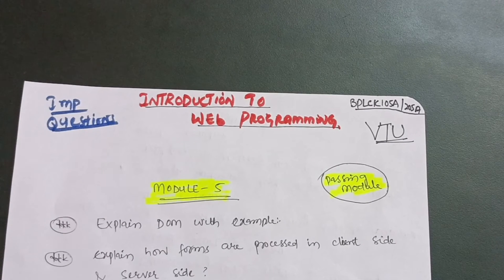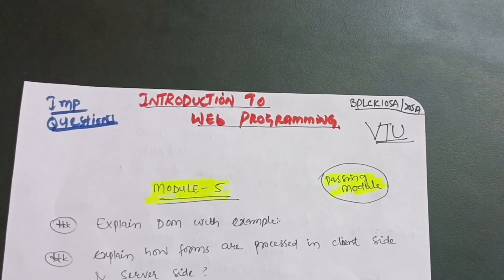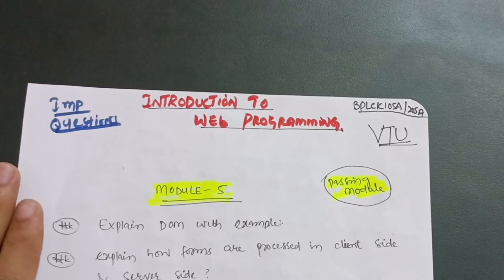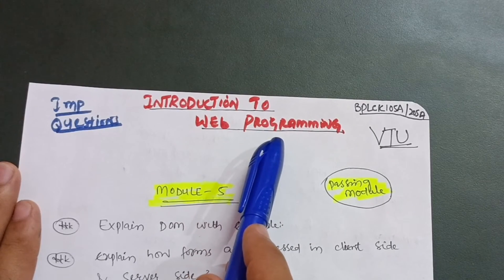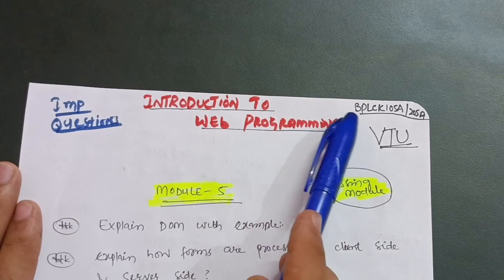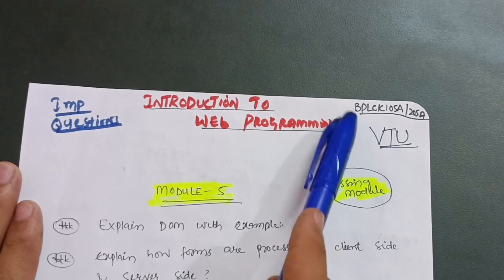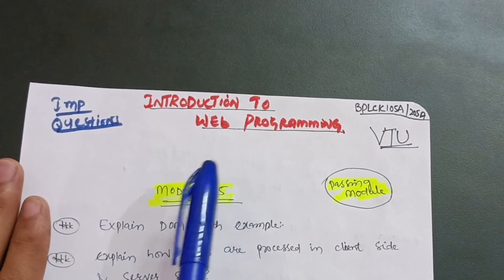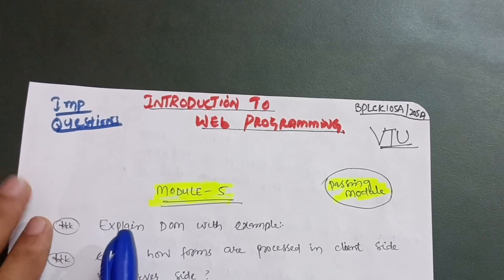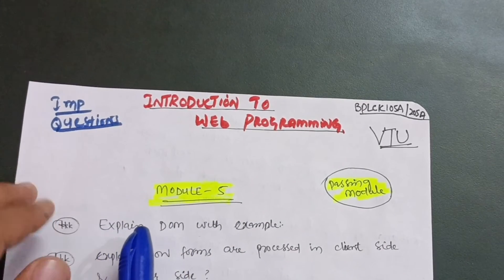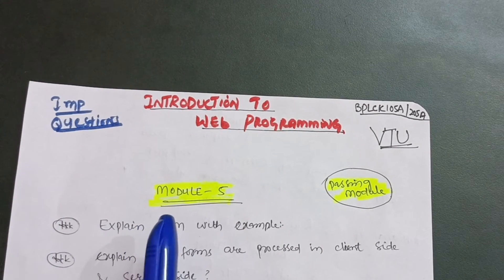Hello friends, welcome back to my channel. Finally, I am with another passing package important questions video for the subject Introduction to Web Programming, which is a first or second semester subject. Its subject code is BPLCK105A or 205A. It was originally a subject in the triple-A branch in sixth semester, but has been inserted into the first and second semester for 2022 scheme students.